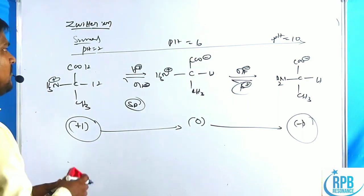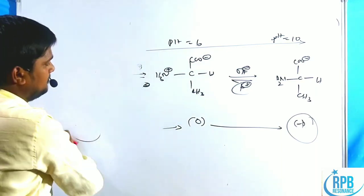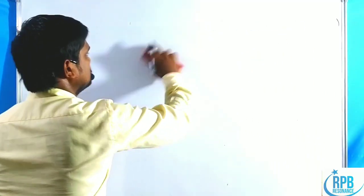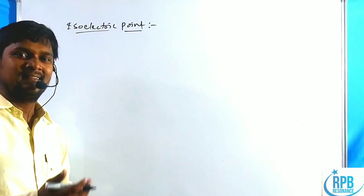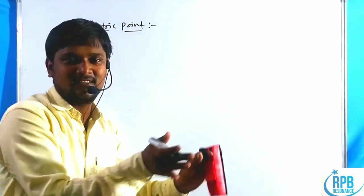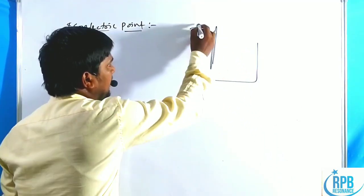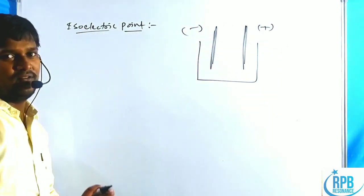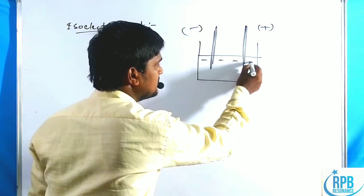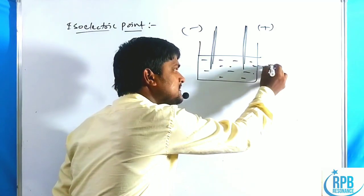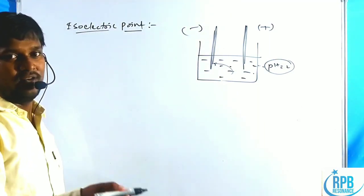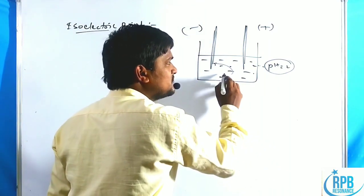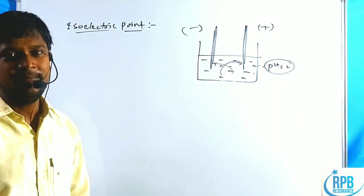Now let us discuss the isoelectric point. At different pH values, the amino acid appears as different ionic forms. Consider a setup with a negative electrode and a positive electrode. In solution at pH less than 2, the amino acid is a cation and moves toward the negatively charged electrode. Anions move toward the positively charged electrode.